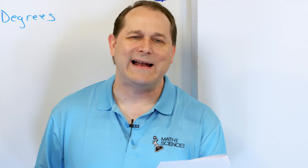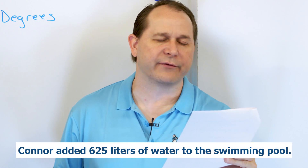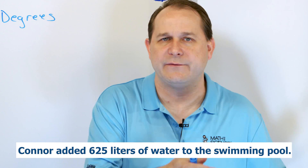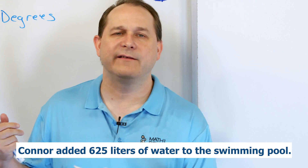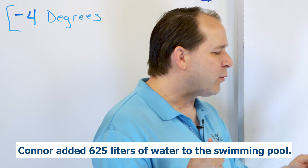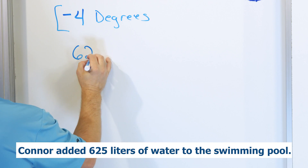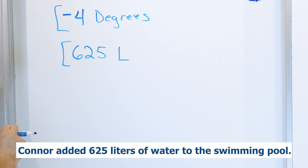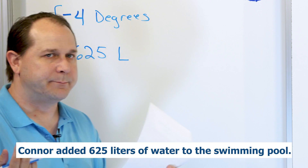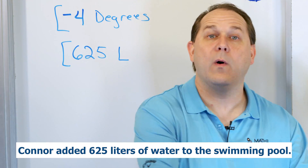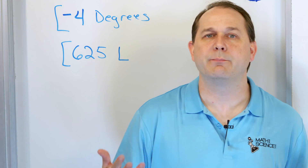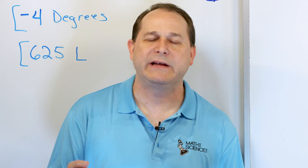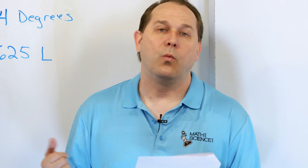Number four: Connor added 625 liters of water to the swimming pool. When you add things, it's a positive number. When you subtract things, it's generally a negative number. Here we're adding water, so we're adding positive 625 liters. If I had a bucket and I were taking away 625 liters from the pool, I would call it negative 625 liters — that's how I would keep track of the idea of taking water away.